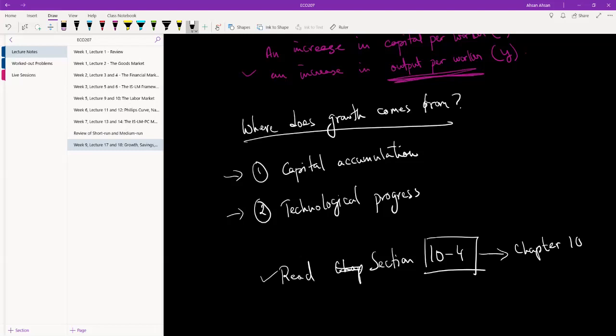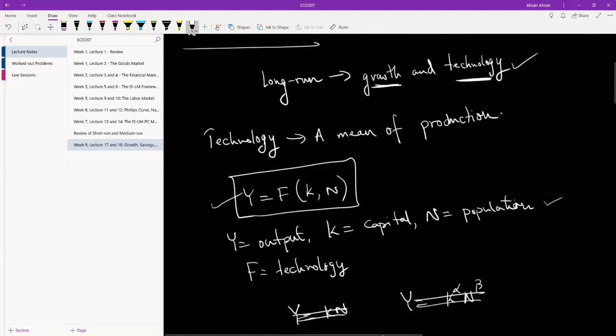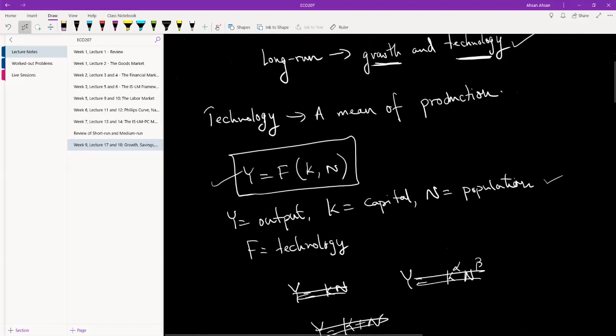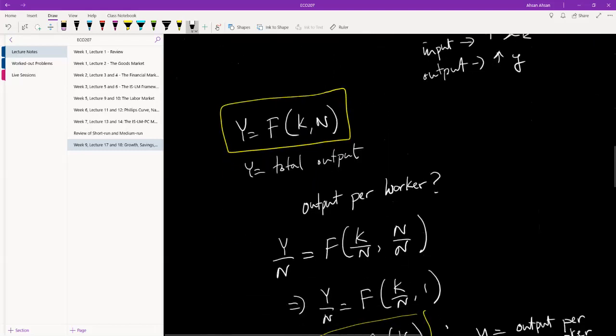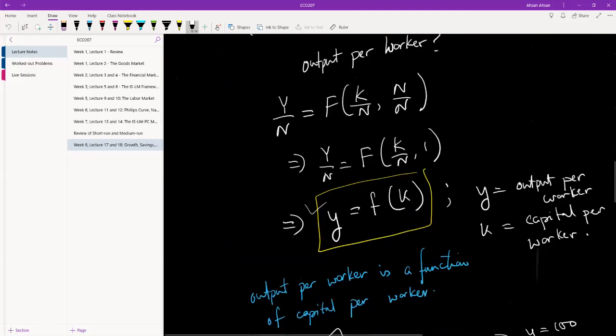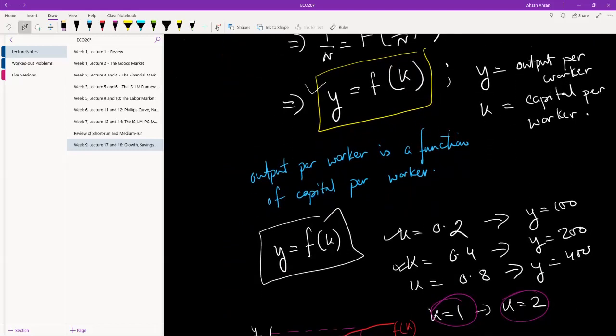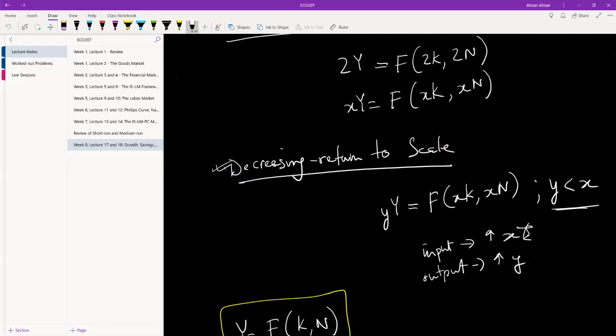So please do that. And once you've done that, you will be more or less ready to get into Chapter 11, which is where we start the real analysis. If you notice, all we've done so far is set things up. We've introduced a technology and then we've taken that technology and we've converted that into the per worker terms, divided by N.